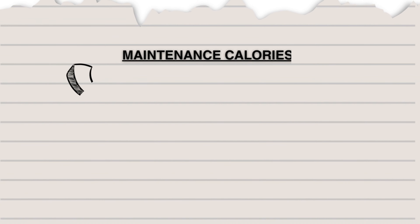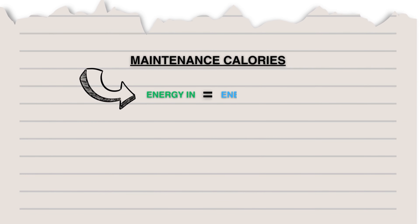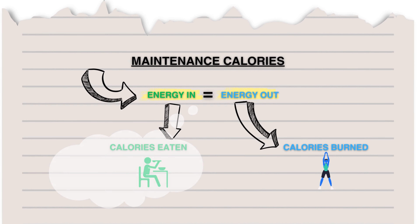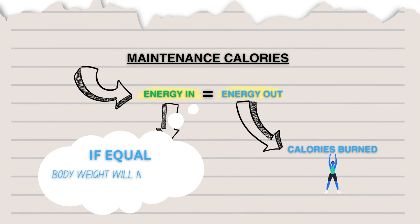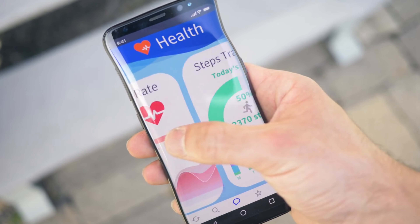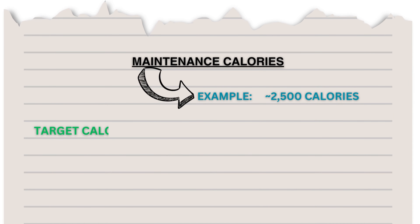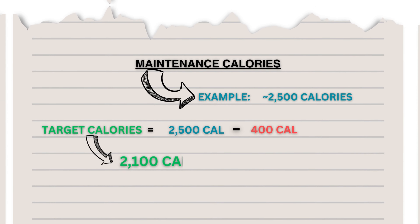First, I would try to identify what my maintenance calories are — the number of calories you have to eat to not gain or lose any weight at all, net zero. It may take a couple of weeks, but using a few online tools and tracking your food, this can be really easy. Once you identify your maintenance calories, I would cut down around 300 to 600 calories from that value.